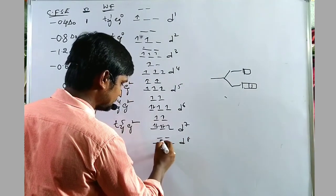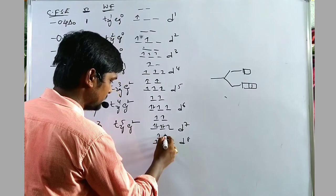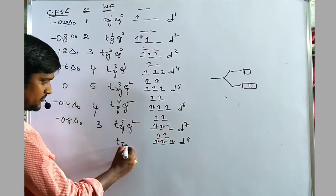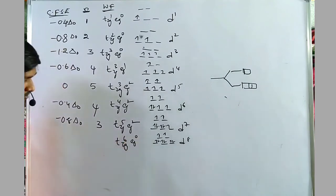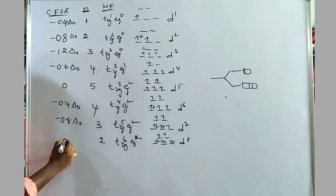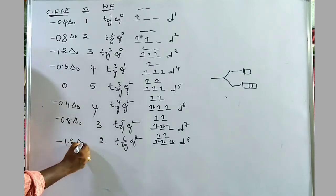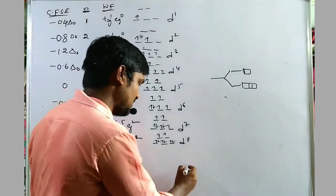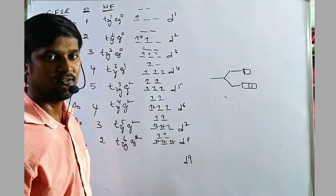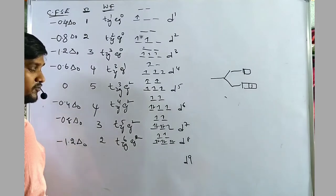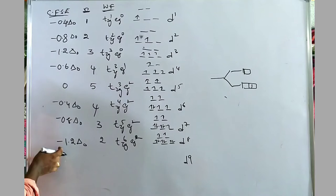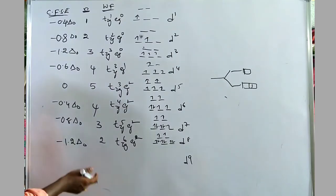For D8: configuration T2G⁶EG², number of unpaired electrons = 2, CFSE = minus 1.2 ΔO. For D9: configuration T2G⁶EG³, 1 unpaired electron, CFSE = minus 0.6 ΔO.